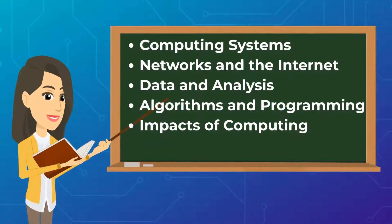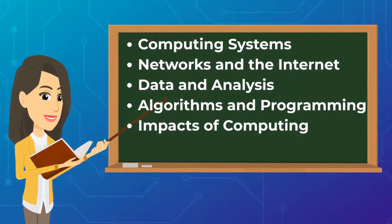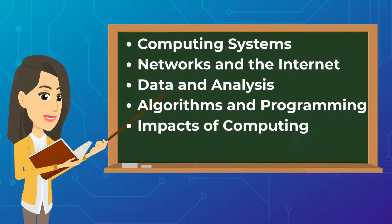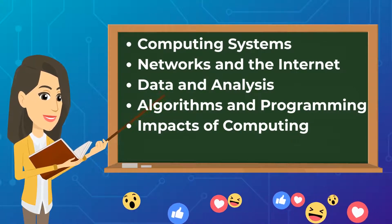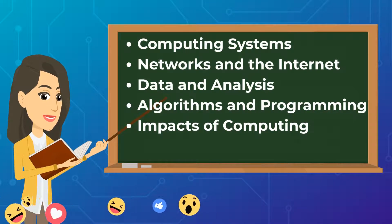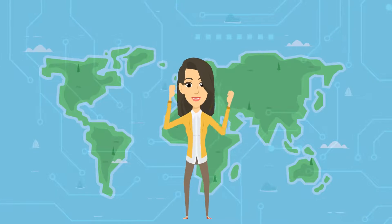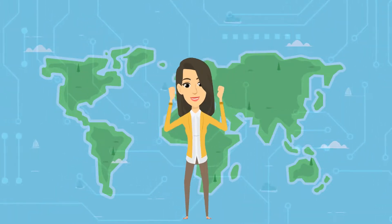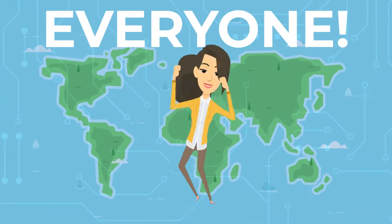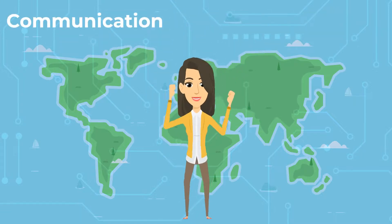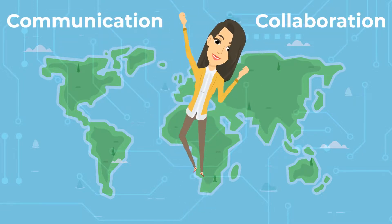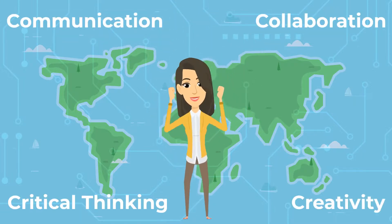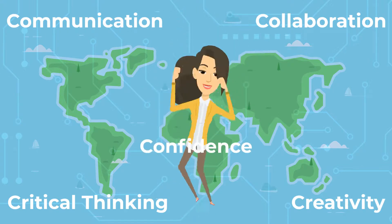Applying what we know about computing systems, networks and the internet, data and analysis, algorithms and programming, and the impacts of computing allow people of all ages to make an impact on the world around them. And what is even better is that computer science is for everyone. Each person has the unique ability to communicate, collaborate, think critically, and be creative while building their confidence along the way.